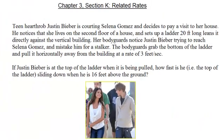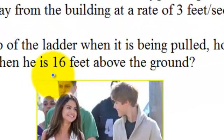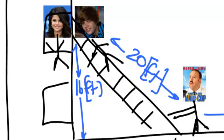Back to the original problem — Justin Bieber is at the top of the ladder when he's being pulled. How fast is he sliding down when he is 16 feet above the ground? So here I have two numbers: one is unknown and one is known. I want to know how fast he's going down the ladder, and I need to label that he is 16 feet above the ground. I know that this is 16 feet above the ground, and we also want to know how fast he's falling down.